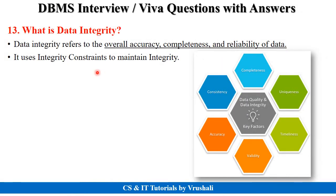The next important question is: what exactly is data integrity? Integrity means the overall accuracy, completeness, and reliability of data. You should store accurate, consistent, valid, and complete information in your table — this is called data integrity. For that purpose, different integrity constraints are used to maintain the accuracy and integrity of the database.